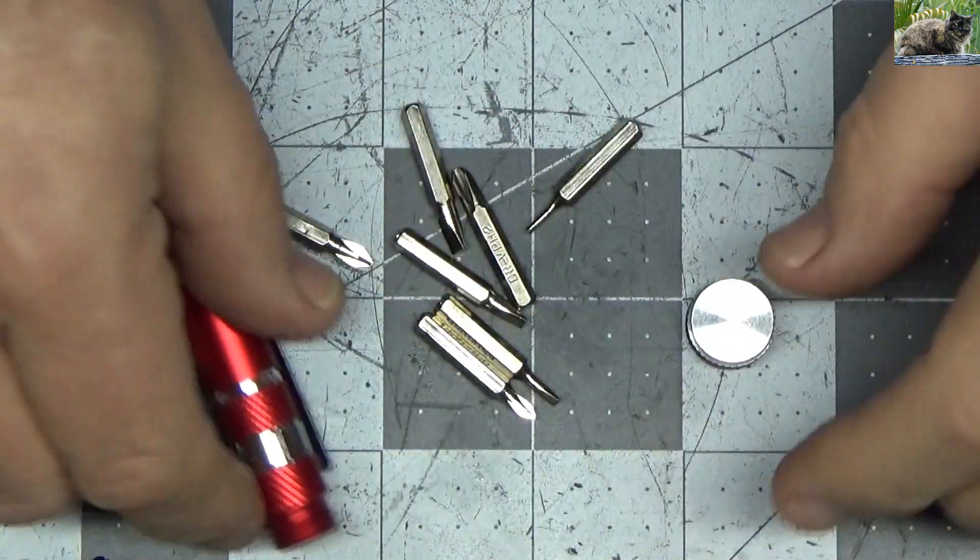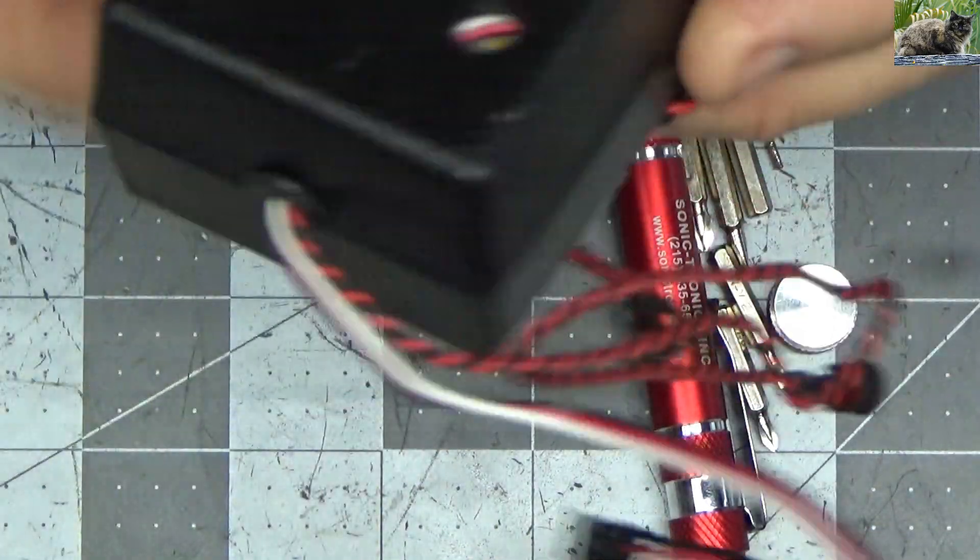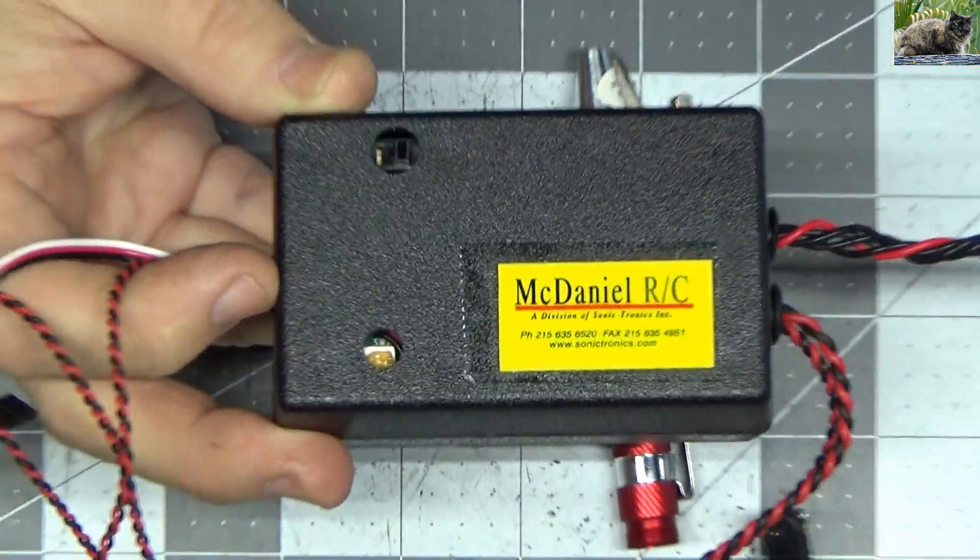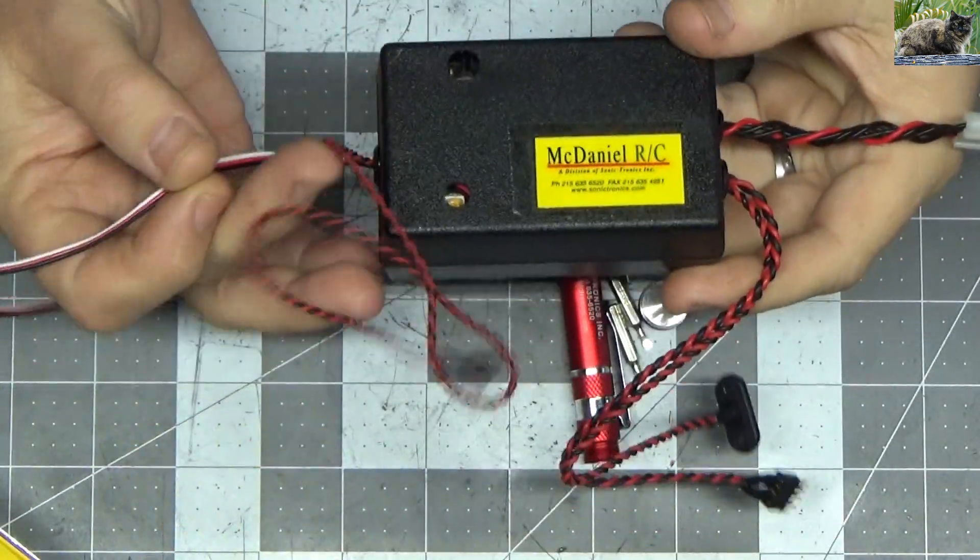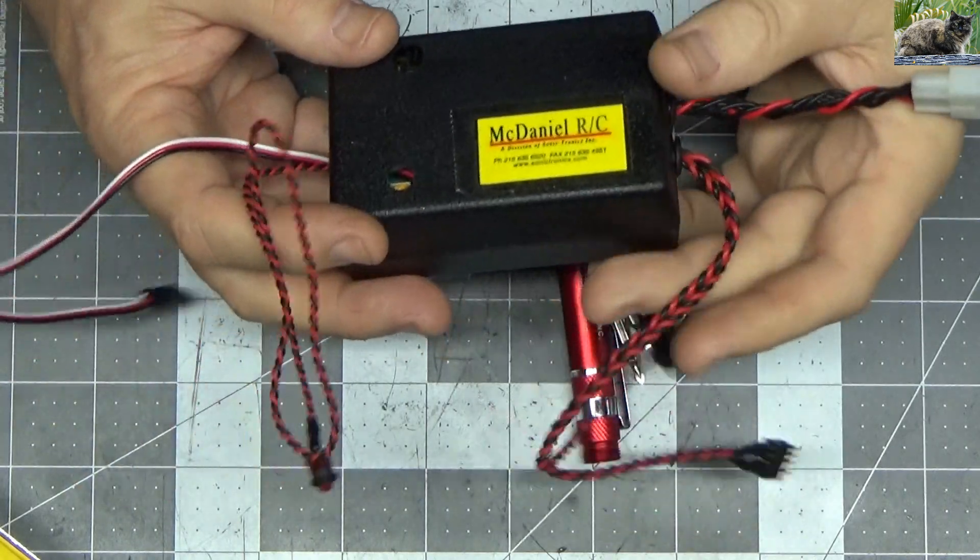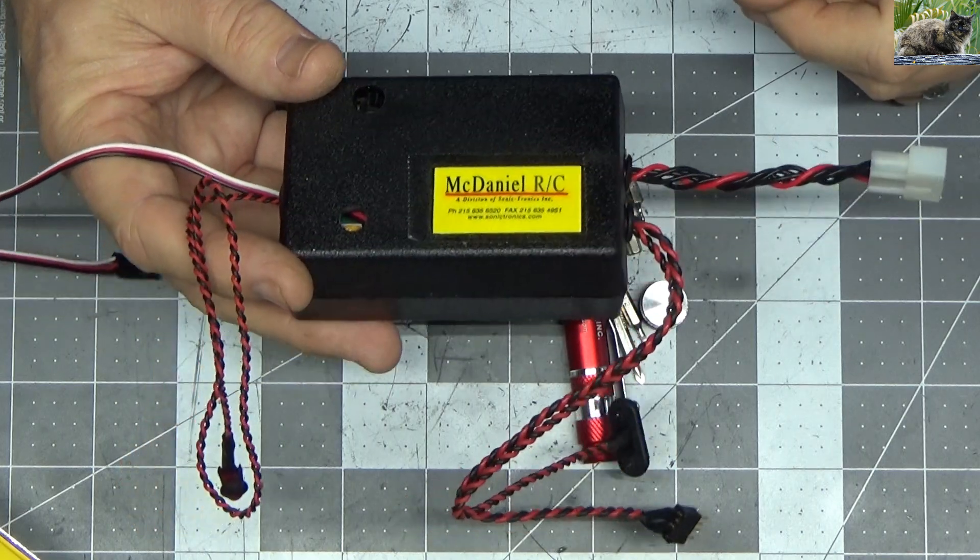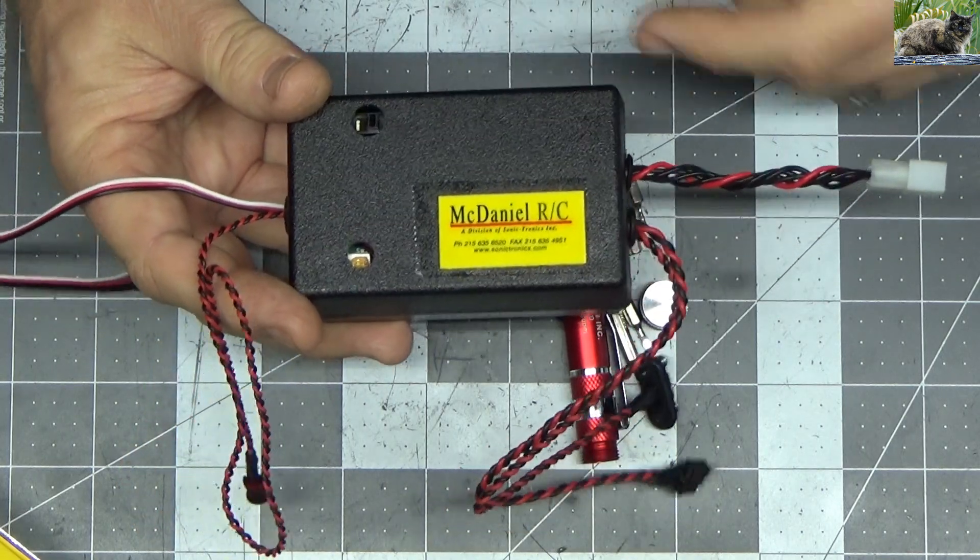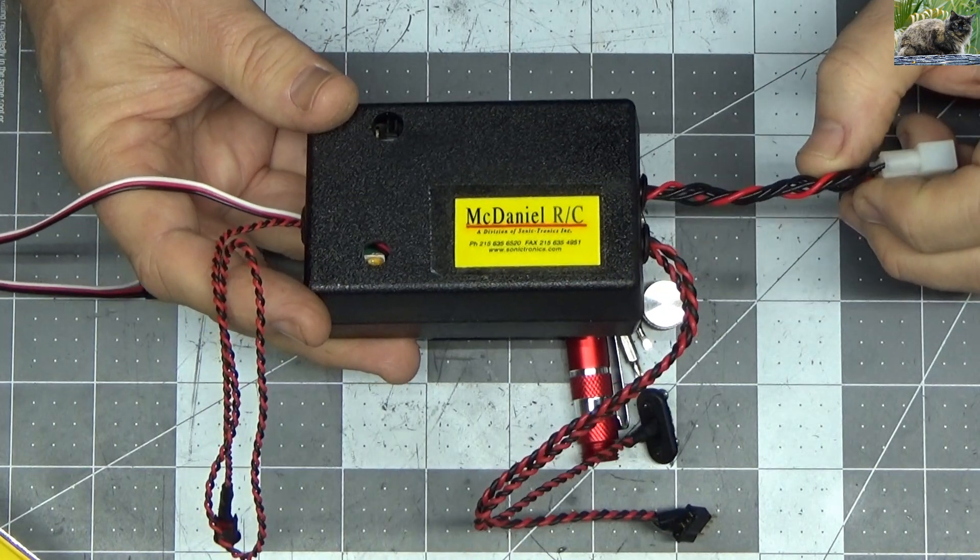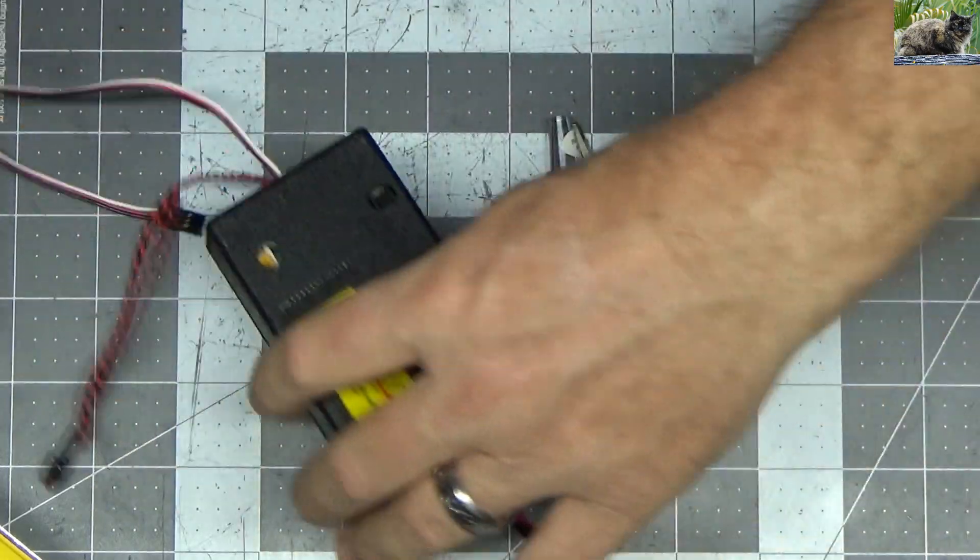So anyway this company SonicTronics McDaniel is really kick-ass. I like their stuff and whether I actually make a video or not of me doing the work on this because there's some soldering and that type of thing, it's unlikely. But what you will see is my Pegasus engine running using this and with my throttle, my servo tester throttle control also. So it's gonna be kind of a cool thing once I get all of this stuff set up and ready to run.